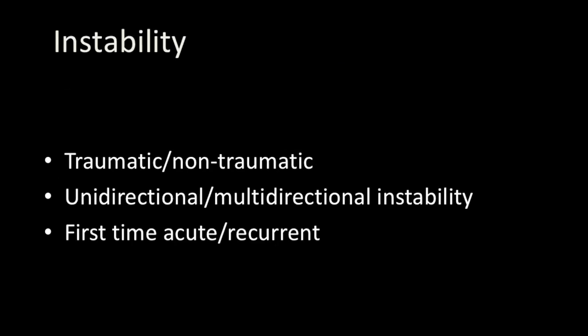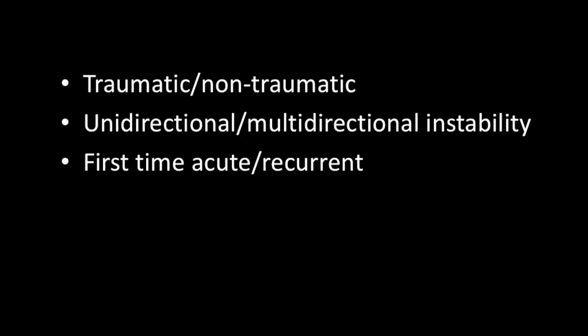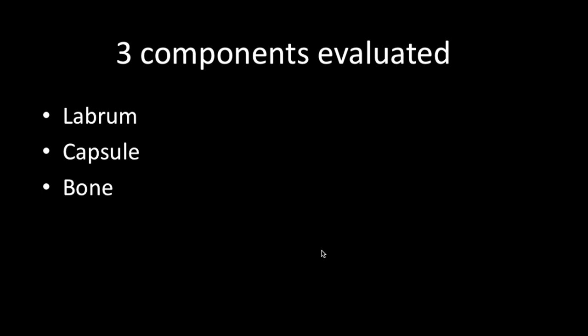Instability could follow an initial episode of trauma, or it could be congenital because of lax supporting structures. It could be unidirectional — more often anterior, or sometimes posterior — but it could also be multidirectional, when it becomes more difficult to diagnose. Whenever we evaluate instability, the three main structures we are looking at are the labrum, the capsule, and the bone — on the glenoid side as well as on the humeral side.